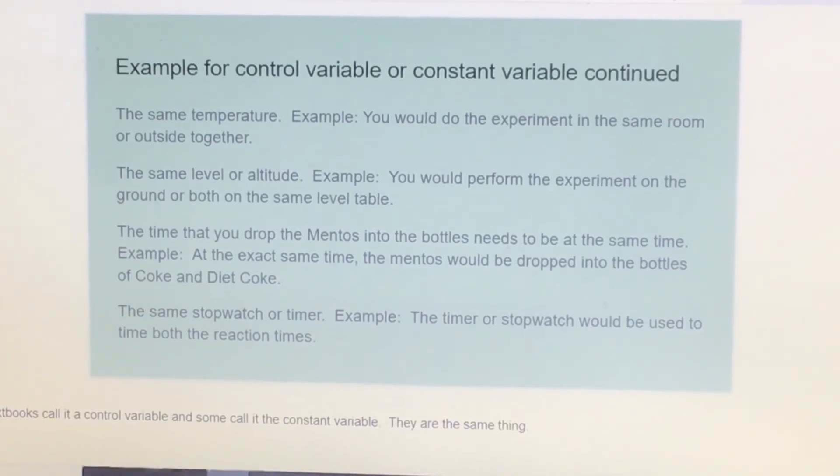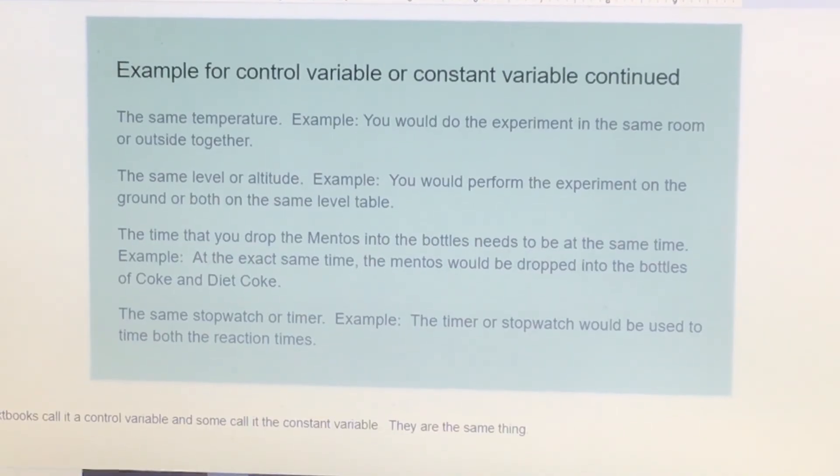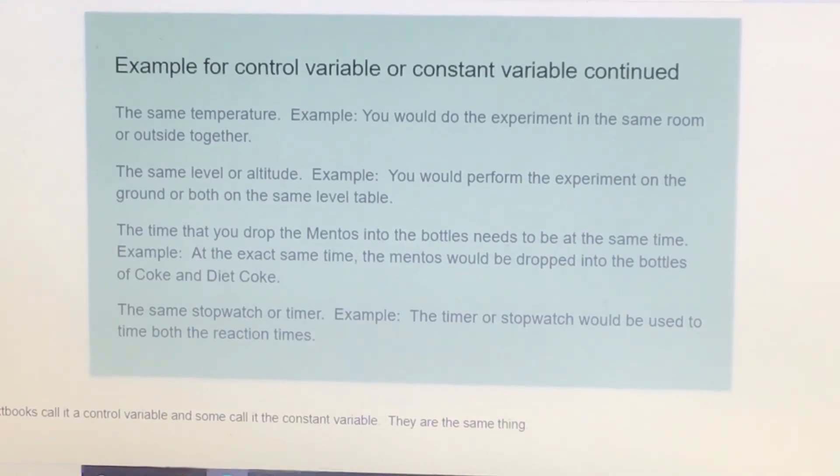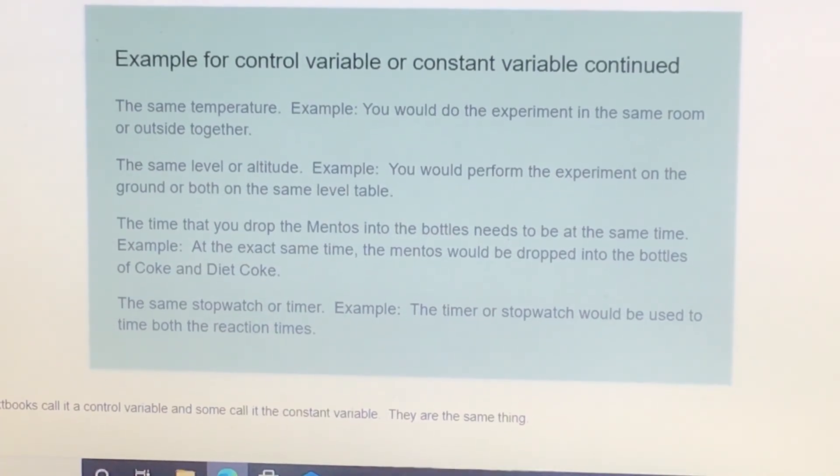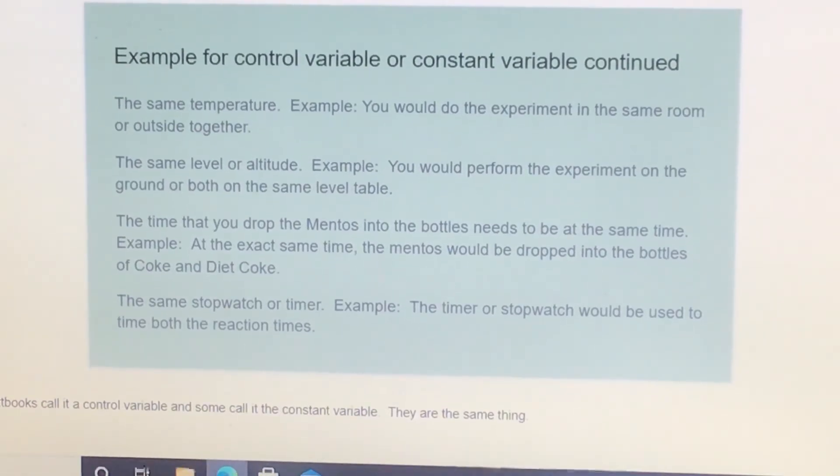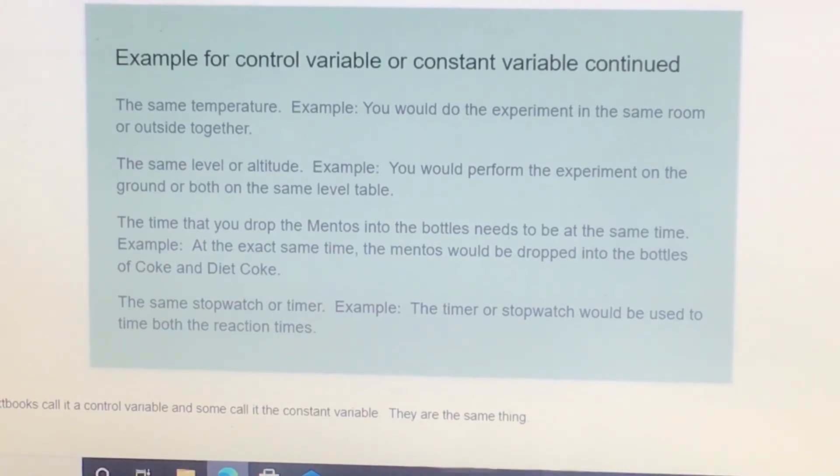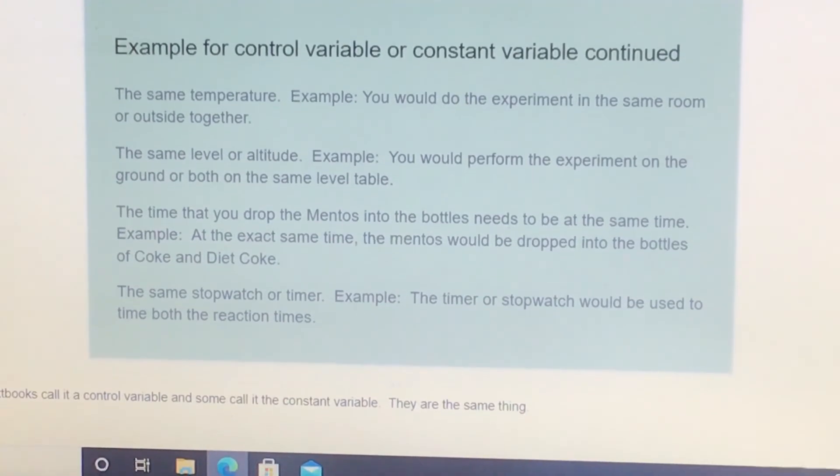An example for a control variable or constant variable: the same temperature. For that experiment you would have the same temperature. You wouldn't have one Coke in the refrigerator and one that was on the counter at room temperature. You'd have the same temperature, the same level or altitude. You would perform the experiment on the ground or both on the same flat table.